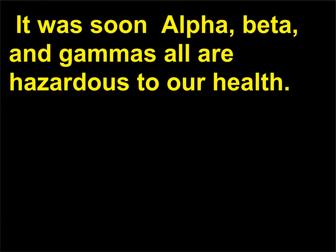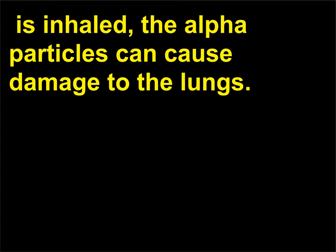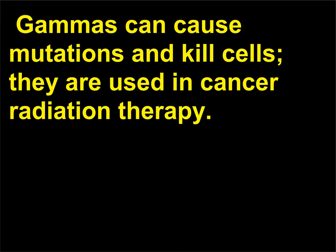Alpha, beta, and gamma rays are all hazardous to our health. Alphas are blocked by skin, but if a radioactive material such as the gas radon is inhaled, the alpha particles can cause damage to the lungs. Betas can penetrate skin and tissue and, if they strike a cell, can cause mutations to the DNA. Gammas can cause mutations and kill cells; they are used in cancer radiation therapy.